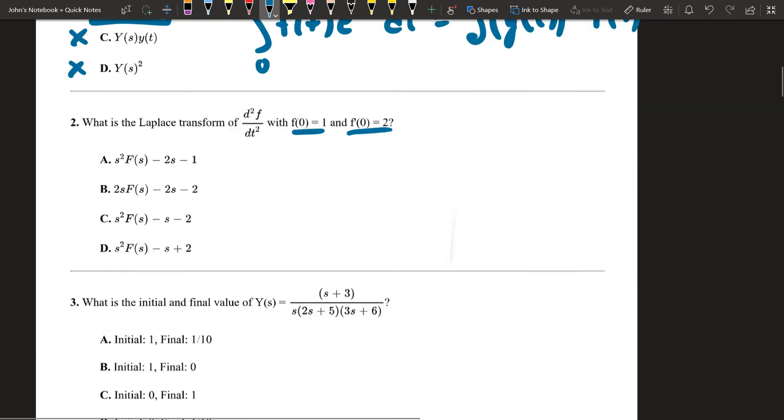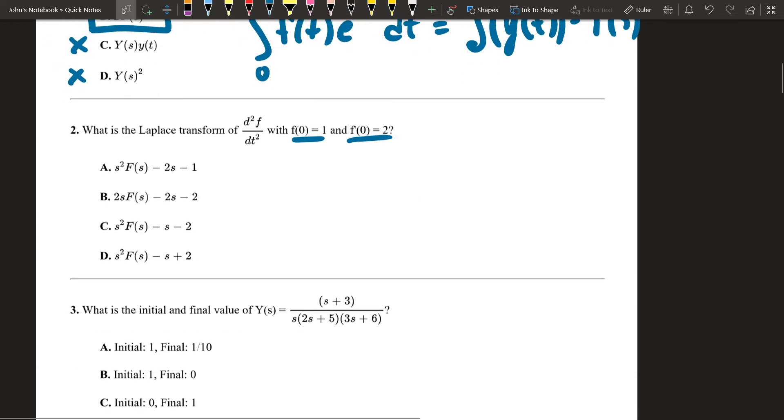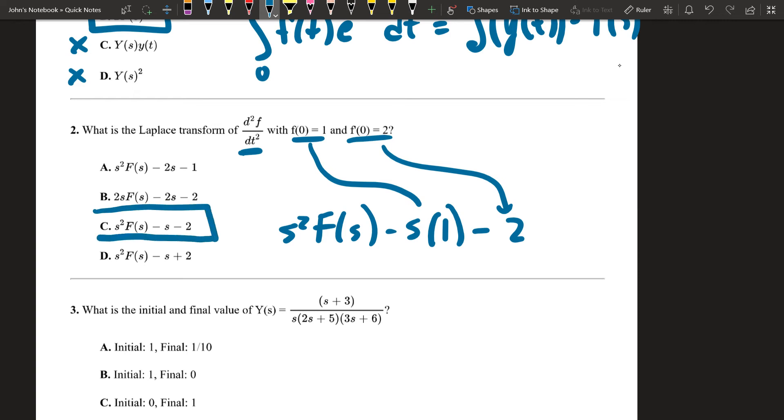I'll come back up to the question. What is the Laplace transform of this? It's going to be s squared times f of s minus, and then we have our first derivative times s, and that's going to be times one. And then we're going to have minus our second derivative, and that'll be minus two. So the correct answer here is c.